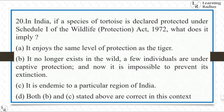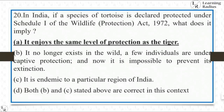In India, if a species of tortoise is declared protected under Schedule 1 of the Wildlife Protection Act 1972, what does it imply? Options: It enjoys the same level of protection as the tiger; it no longer exists in the wild; a few individuals are under captive protection and it is impossible to prevent its extinction; it is endemic to a particular region of India. The answer is: it enjoys the same level of protection as the tiger.